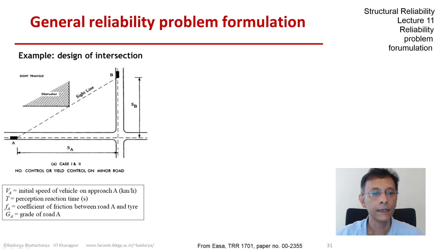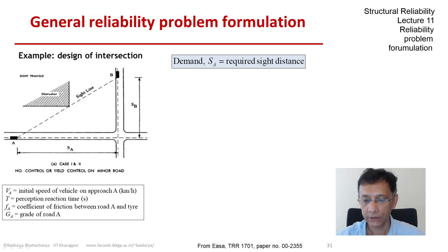We need to provide a safe sight distance for the driver going down road A to avoid a possible collision with a vehicle coming down road B. The demand in this setup is the required sight distance.